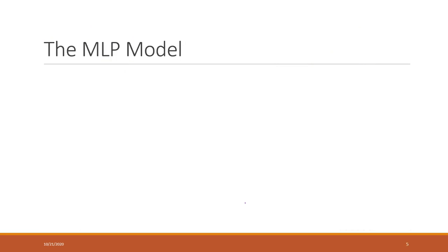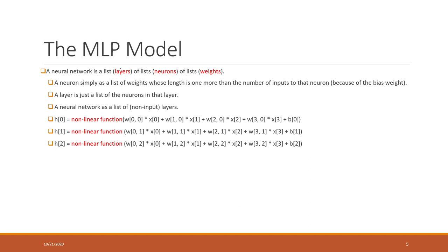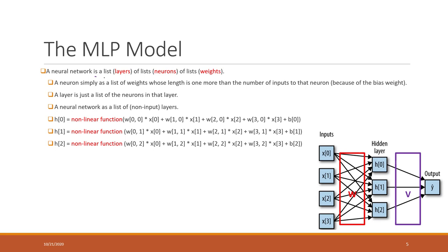Now let's look at the MLP model. The MLP model is a neural network that contains multiple layers. In this case, we have three layers: the input layer, one hidden layer, and the output layer. Each layer has several neurons. The input layer has as many neurons as features you have. For hidden layers, you can define how many units you want. You can also determine how many hidden layers you want. For the output layer, if it is a regression model there is only one output; for classification, the number of categories equals the number of units in the output layer.